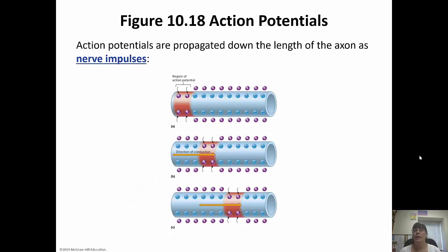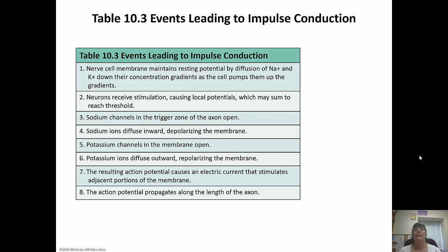This shows how the action potential travels down the axon as a nerve impulse — one section becomes active, then the next, then the next. This chart summarizes what happens, which we just talked about.